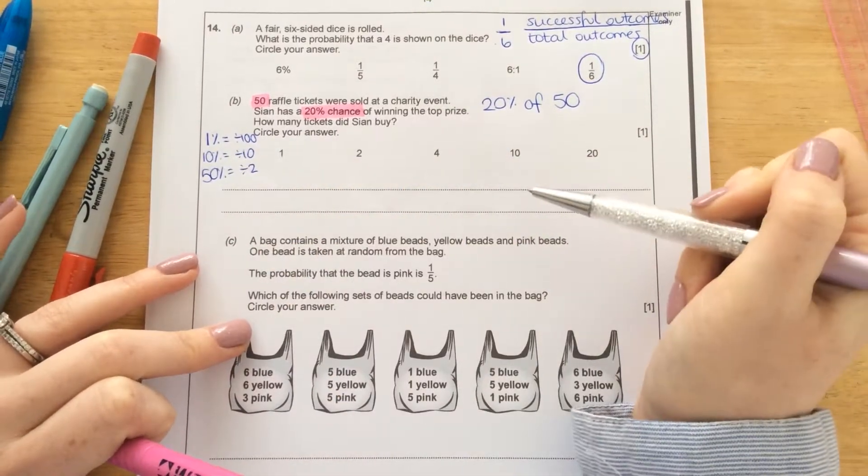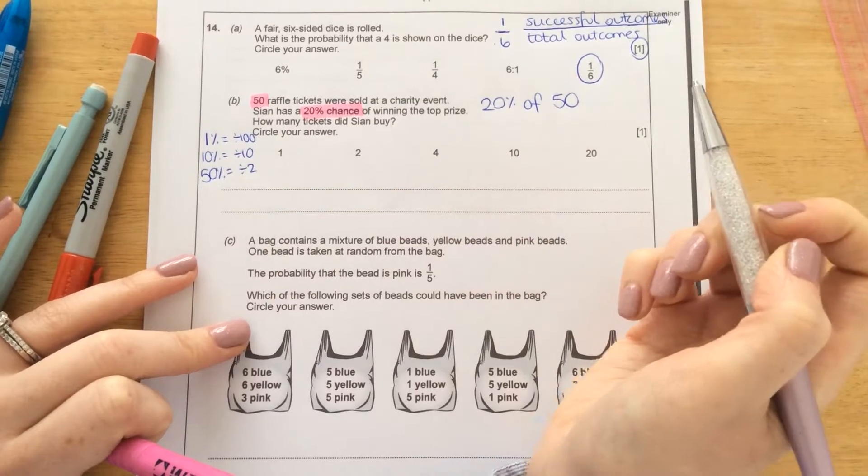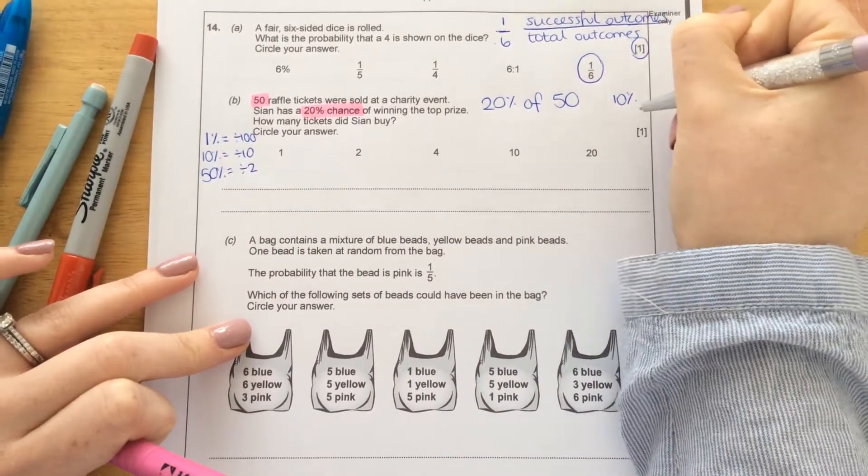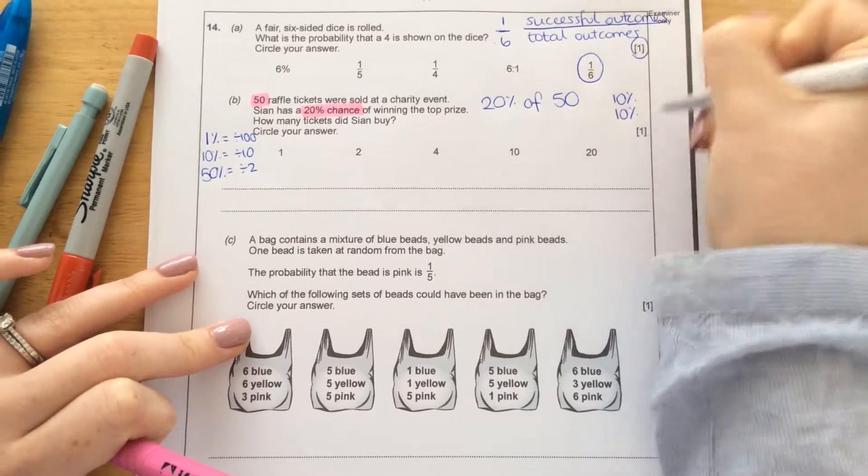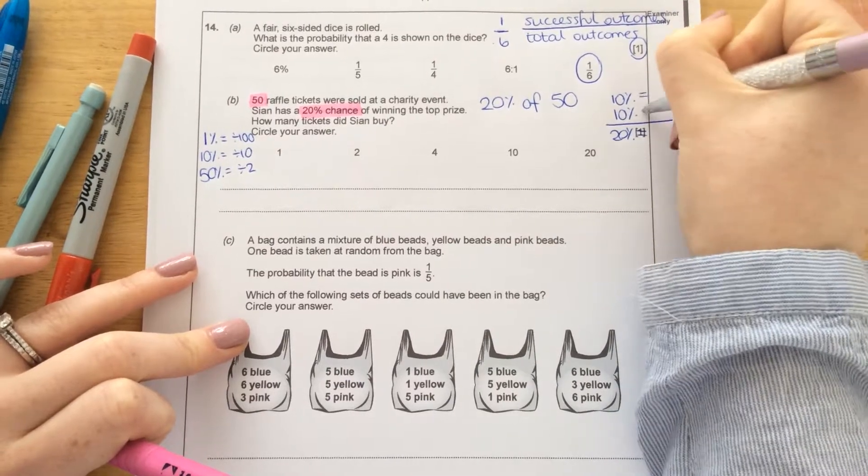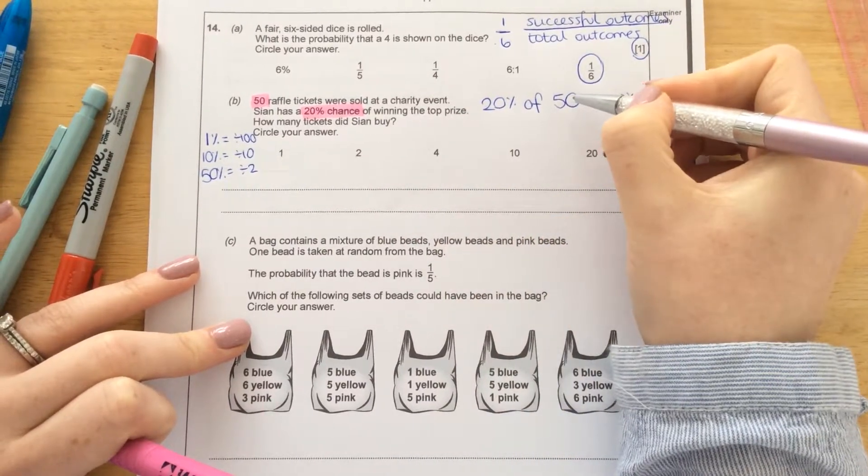So with these, we can work out any percentage. So we can see that 20% is actually just doubling 10%. So I can first of all find 10%. And then another 10%. And that would give me my 20%. So all I've got to do is divide this by 10.